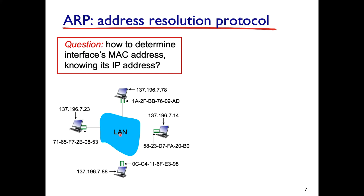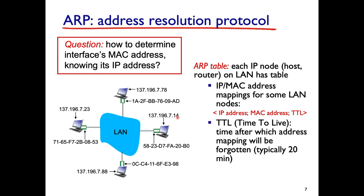In a local area network, every machine has an IP address and an Ethernet adapter address. If one machine wants to send a packet to another, it knows the IP address — but how does it find the MAC address? This is done through an ARP table, or ARP cache, maintained by every machine. The table maps IP addresses to corresponding MAC addresses. TTL indicates how long an entry is valid — typically 20 to 60 minutes — after which it is erased. This table is dynamic, growing and shrinking depending on communication activity.